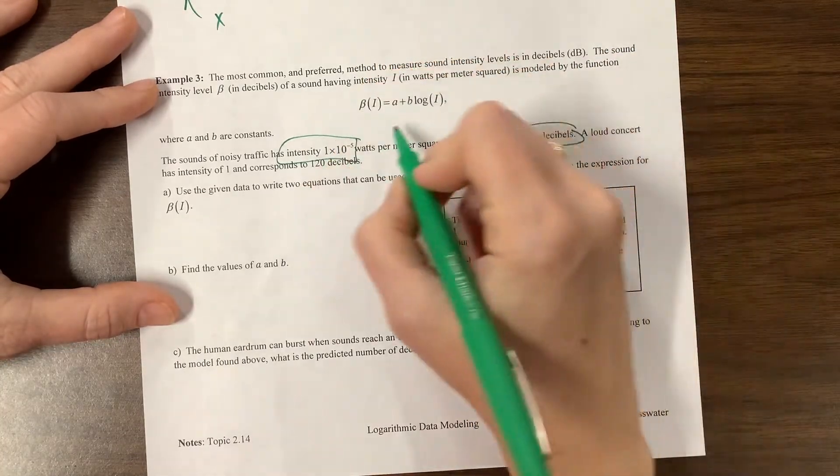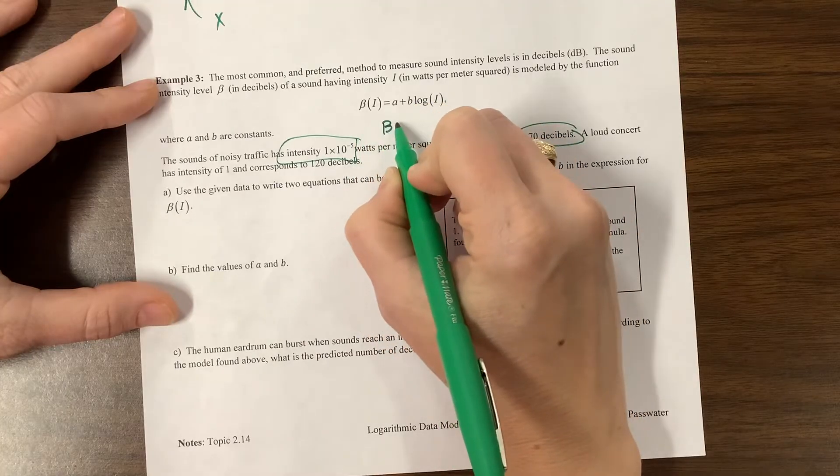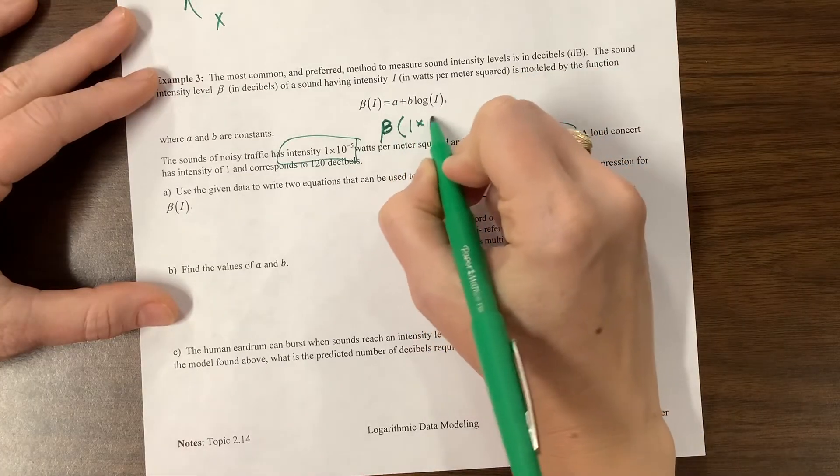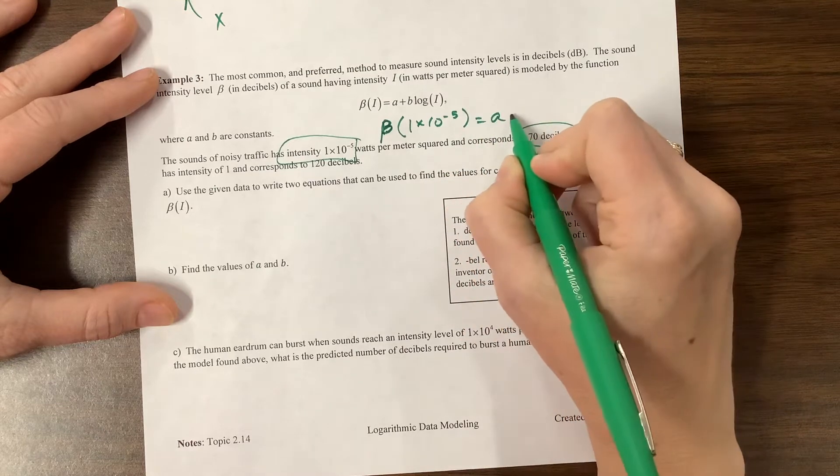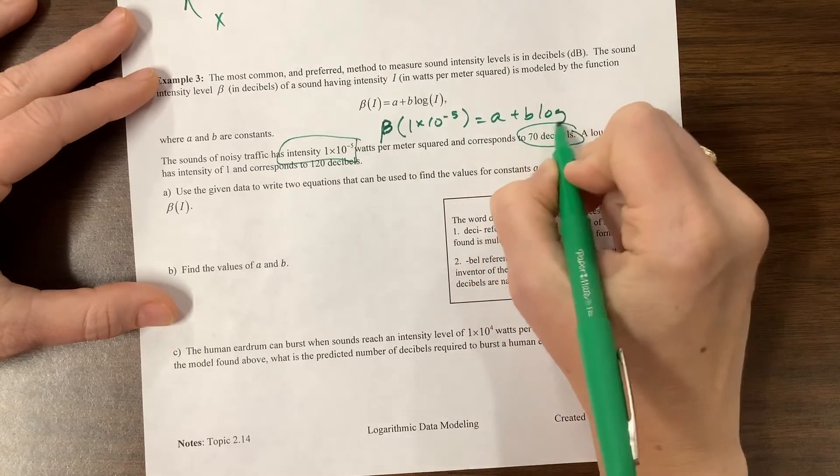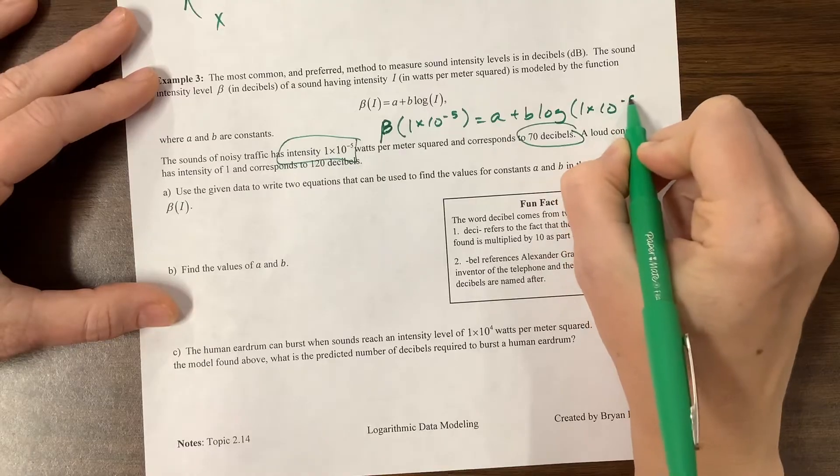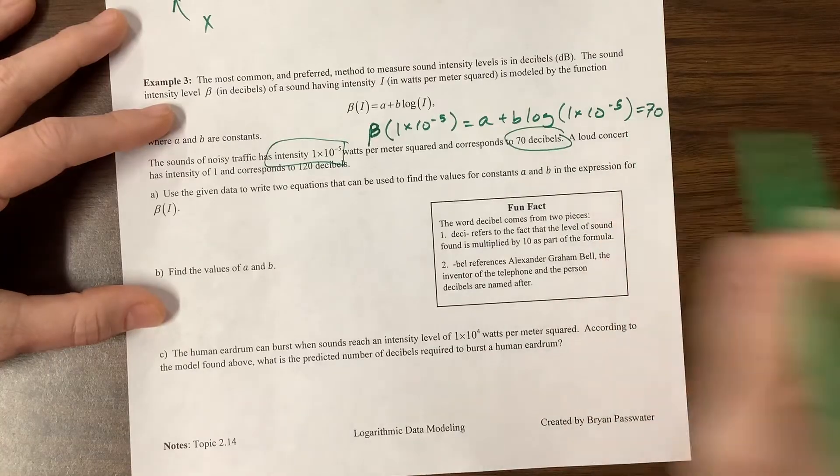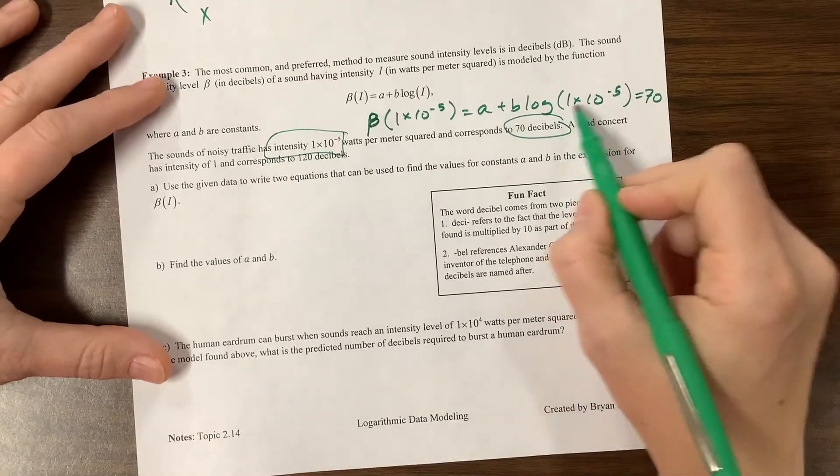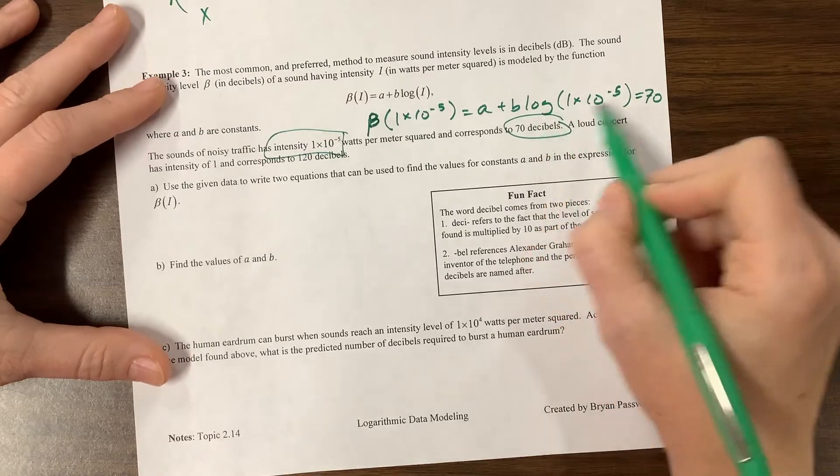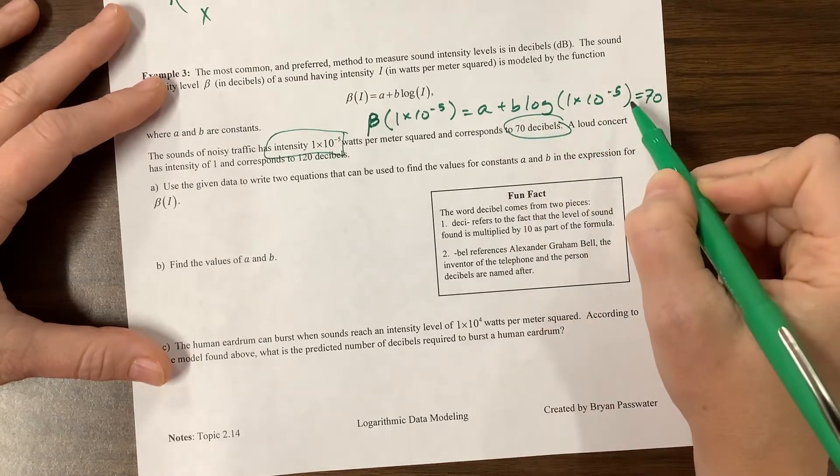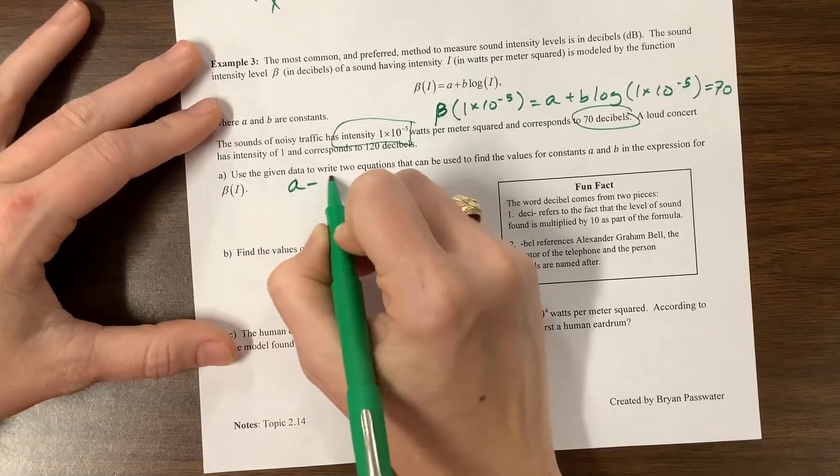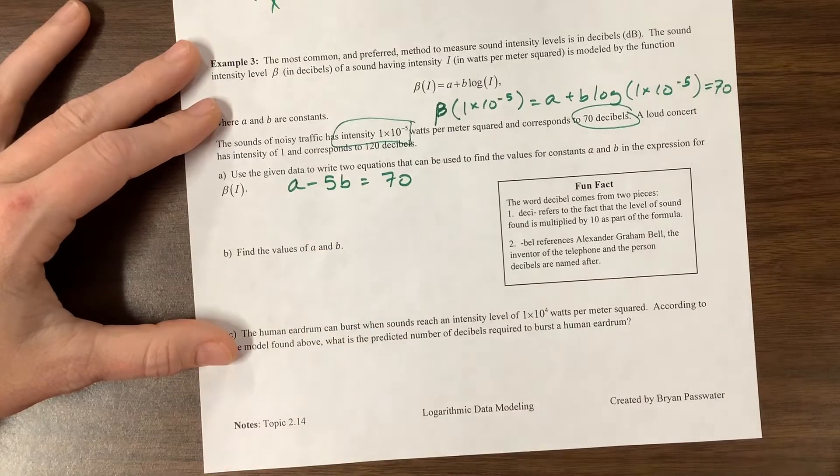This intensity corresponds to this many decibels. So what I have here is that when I have a beta of 1 times 10 to the negative 5 would be equal to A plus B times the log of 1 times 10 to the negative 5. And this would equal, corresponds to 70 decibels. I'm writing this in a weird spot. But let's clean this up for a minute. 1 times 10 to the negative 5 is just 10 to the negative 5. Log base 10 of 10 to the negative 5 becomes negative 5. B times negative 5. So my first equation is A minus 5B equals 70.